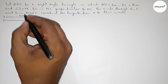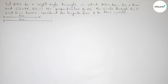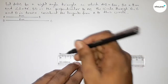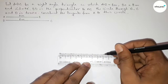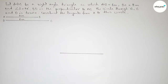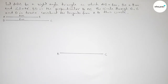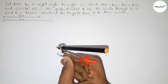Now we have to construct the right angle triangle ABC. First, we draw a line of length 8 centimeter, taking point B here and point C here. Now we have to draw a 90 degree angle at point B using a compass. Putting the compass on point B and taking any length, drawing an arc.